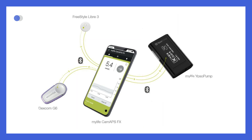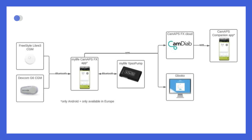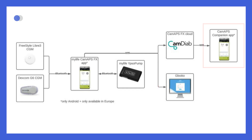The MyLife CAM-APSFX app is available for Android, with an iOS version coming soon. It allows generating and exporting reports as PDFs from the app. Additionally, users can connect the app to the Gluco platform for sharing data with healthcare professionals. Family and caregivers can track the user's progress through the Companion app, and SMS-based remote monitoring is also available.